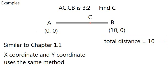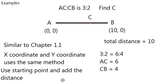And our next step is to do a ratio. Same method as 1.1. If you're quick about it, AC is 6, CB is 4. And now, we have kind of what C is, basically.